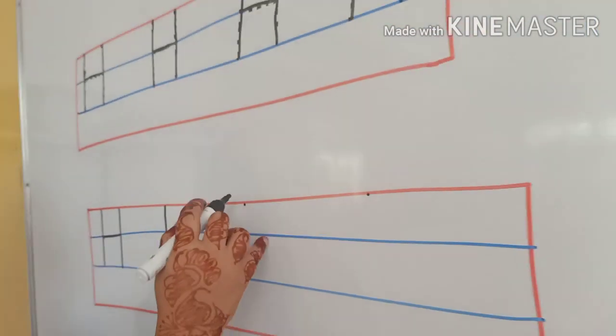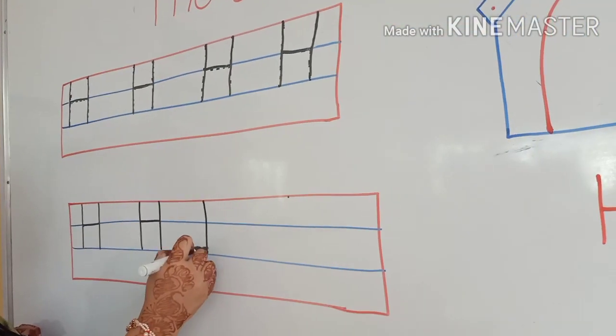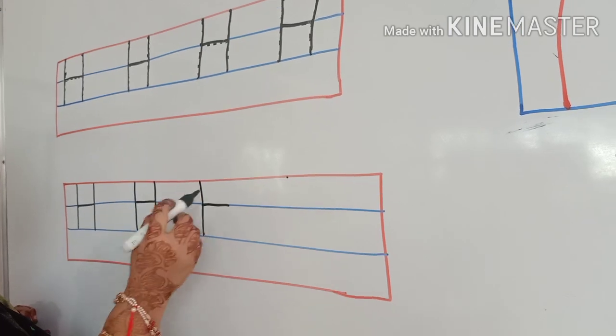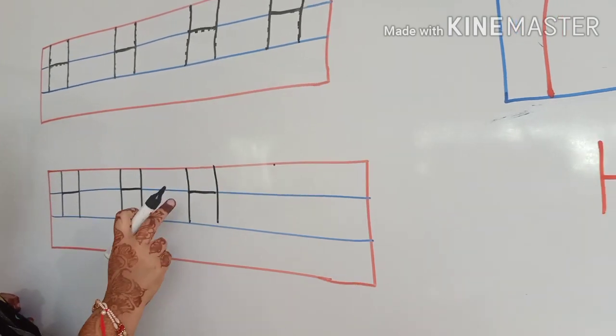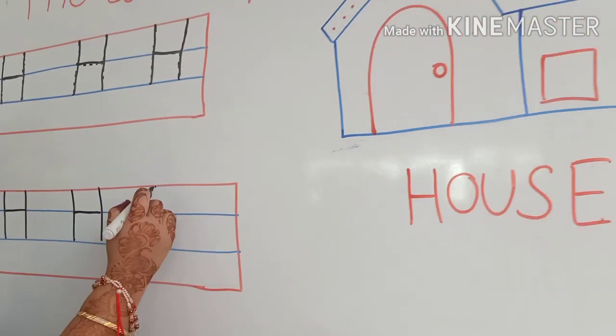H for house. Standing line, sleeping line, standing line. H. H for head.